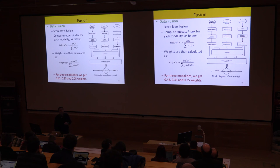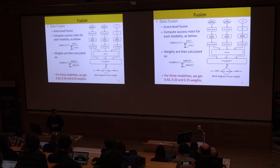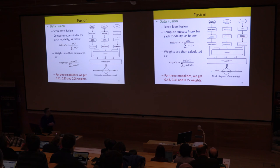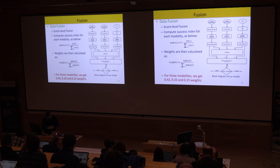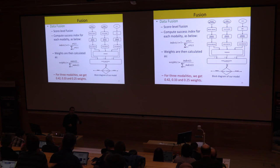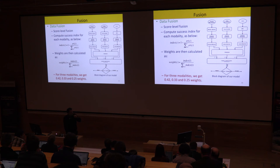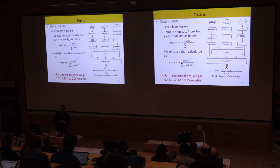We also use fusion — a well-known technique to improve accuracy. You can fuse at different levels; in this setting, we chose score-level fusion. Different modalities contribute, and the final decision is a weighted one, where each weight is based on the accuracy of each single modality. The slide movement has a weight of 0.42 as the most accurate modality, pickup has 0.33, and voice recognition was the least accurate.